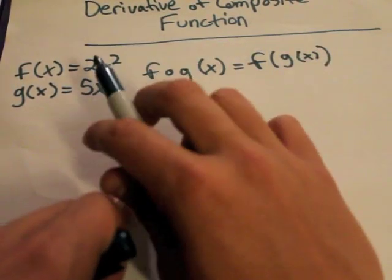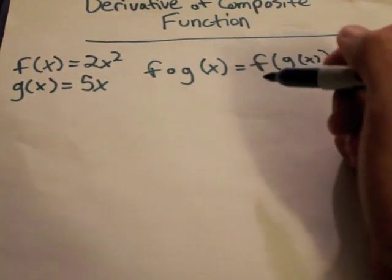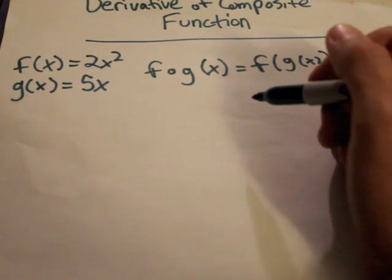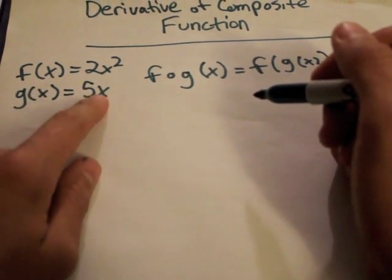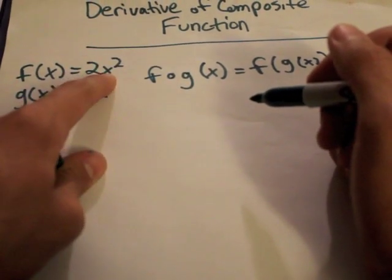So f of x is 2x squared. Now, if we want to plug in g of x into f of x, we have to plug in 5x wherever we have an x in f of x.